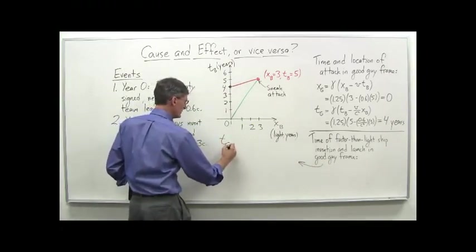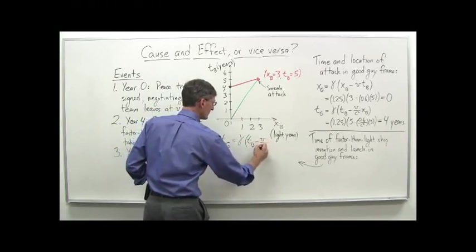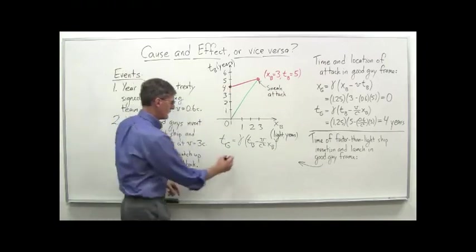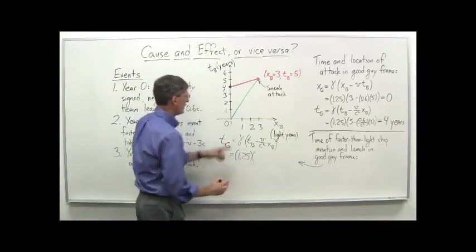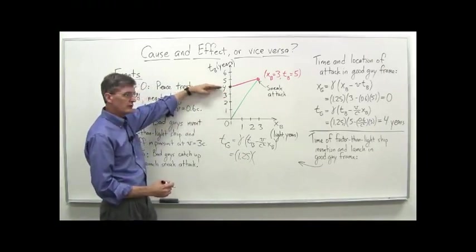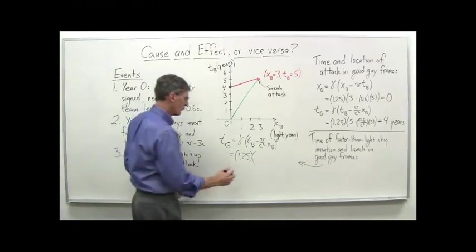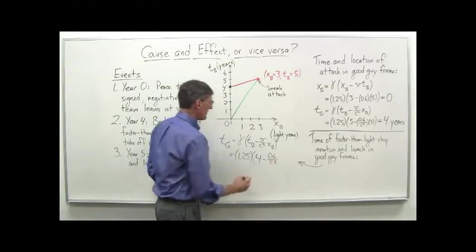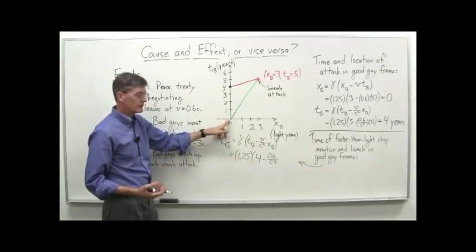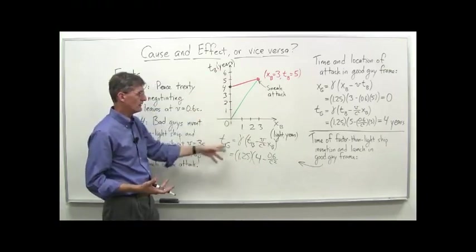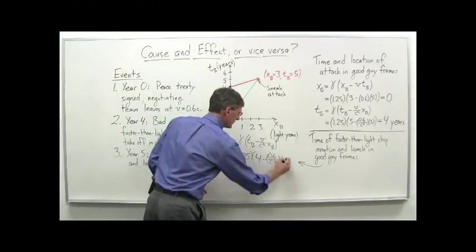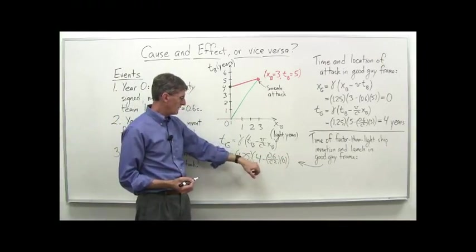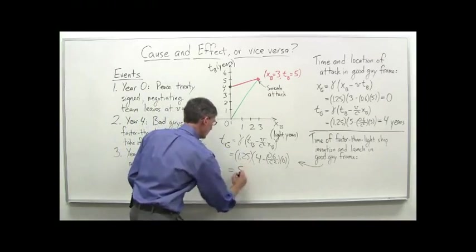So we have, in this case, T sub G equals gamma times T sub B minus V over C squared, X sub B. And for the invention and launch right here, notice that, well, we can put gamma in first. We'll do that. So it's 1.25. What time does that occur in the bad guy's frame? Well, it occurs at T equals 4, right? That's the time that occurs, so it's 4. And then, minus 0.6 over C squared. And where does that launch occur in the bad guy's frame? The X sub B coordinate? It's just 0. It's on their home planet, right? So that's the 0 point in their coordinate system. So actually, this whole thing, this second thing here is just times 0. So that whole second term disappears. And I'm just left with 4 in the middle here. It's 4 minus 0. And 4 times 1.25 is 5. And our units are years.